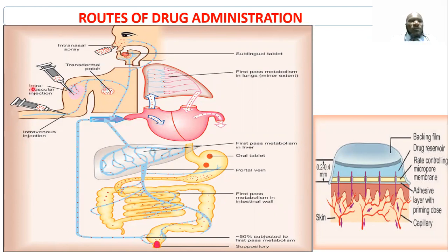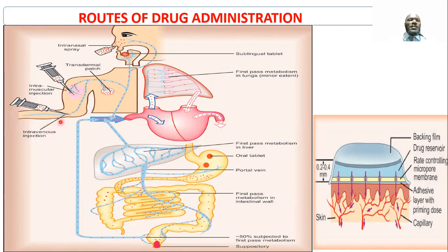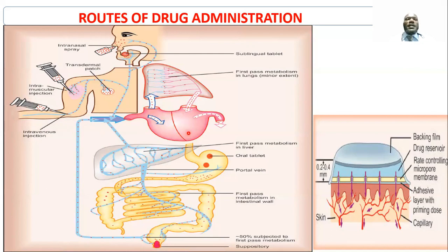Also, intramuscular injection will also bypass first-pass metabolism and reach directly into the central compartment. For intravenous administration, it bypasses absorption — once administered, it reaches directly into systemic circulation. The bioavailability of a drug taken intravenously is 100%.